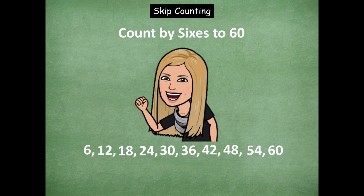As you are counting these numbers, you want to be putting a finger up each time. So at 12 you put up two fingers, at 18 you put up three fingers — because six times two is 12 and six times three is 18. That will help trigger it in your memory.